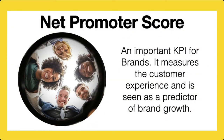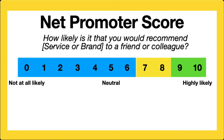It's fairly simple to calculate. It's based on a single question: how likely is it that you would recommend the service or brand to a friend or colleague? In our case, that would be our donut shop. The scale goes from zero to ten, with zero being not at all likely, ten being highly likely, and five being neutral. We survey our customers either at the point of sale or after purchase, perhaps via email or some other data collection method.